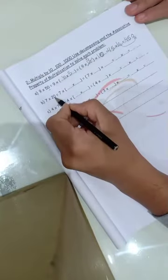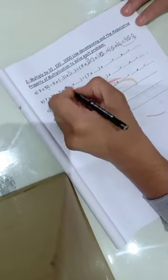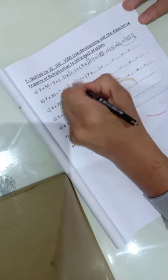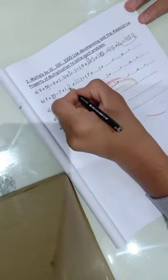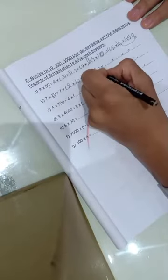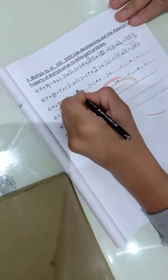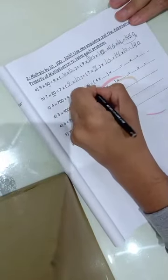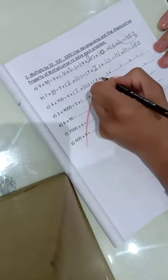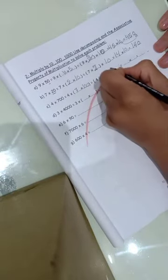Next, 7 times 20. The factors of 20 are 2 times 10, so 7 times 2 times 10. 7 times 2 is 14, times 10 equals 140. Next problem: 4 times 700, which is 4 times 7 times 100. 4 times 7 equals 28, times 100 equals 2800.